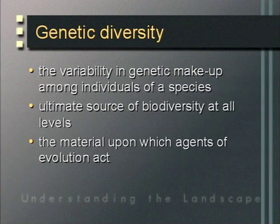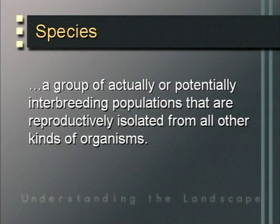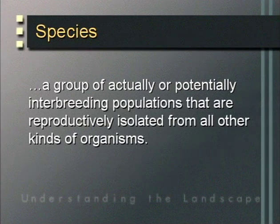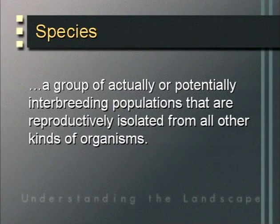The next level of biodiversity is the species and population level. A species is a group of actually or potentially interbreeding populations that are reproductively isolated from all other kinds of organisms. Classically, species were based on readily identifiable morphological characteristics — such as flower parts for plants or feathers and teeth for vertebrates — but recent advances in molecular techniques allow us to identify species very precisely using genetic criteria.